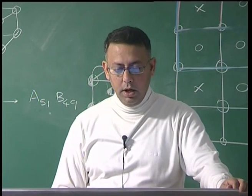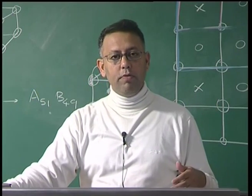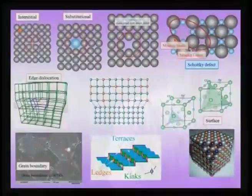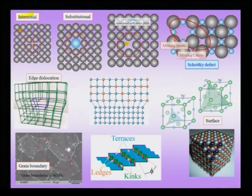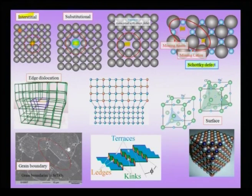Before closing this section, let us consider a gallery of defects — some already discussed, some briefly mentioned. Point defects include an interstitial, present in the interstitial void of a material, and a vacancy. If one of the atoms has been replaced in the lattice by a different atom (shown in blue), it is called a substitutional defect or substitutional alloying element. A pair of defects like a missing anion together with a missing cation in an ionic substance is called a Schottky defect, maintaining overall charge neutrality.